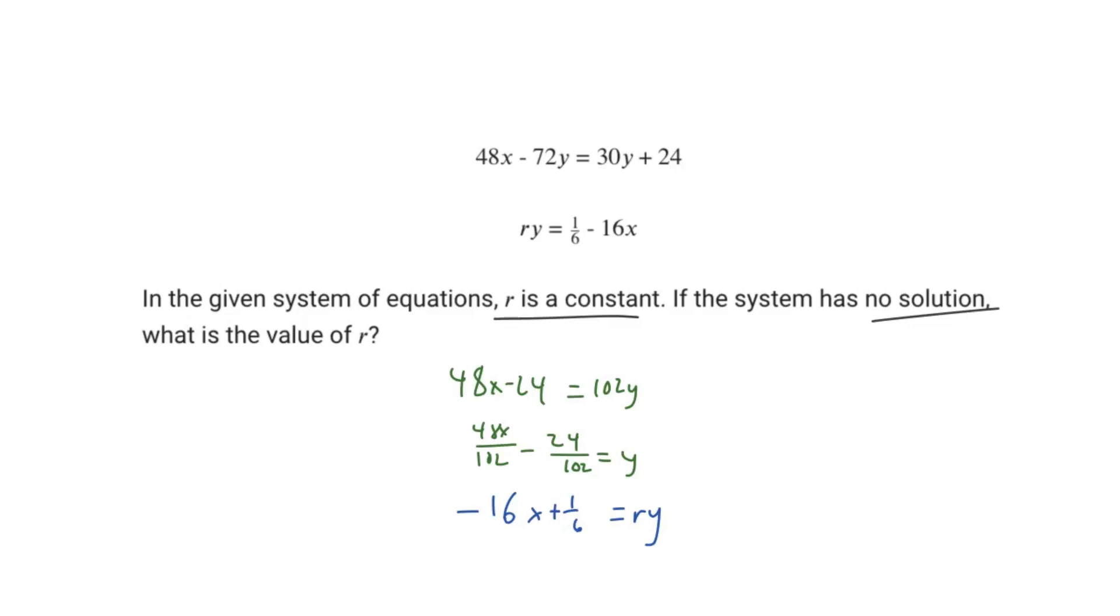I've already done some of the work here because writing with a mouse is very hard. So we just arrange the top equation into slope intercept form. We get y equals 48x over 102 minus 24 over 102. And we compare that to the other equation, which is stated as ry equals 1/6 minus 16x.